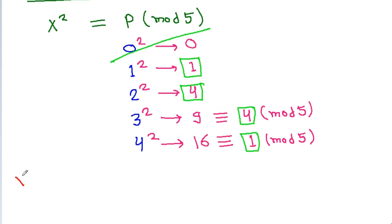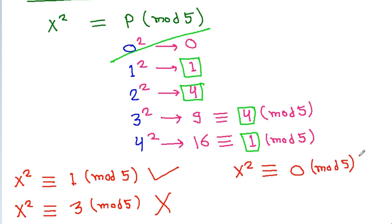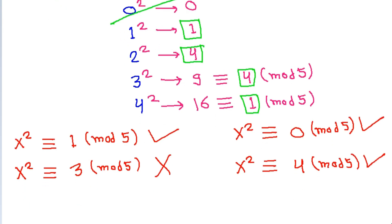So if it is given that x squared is equivalent to 1 mod 5, then it is possible because 1 is a quadratic residue of mod 5. Similarly, if it is equivalent to 4 mod 5, then it is possible. But if we have x squared equivalent to 2 mod 5, then it is not possible because 2 is not a quadratic residue of mod 5.